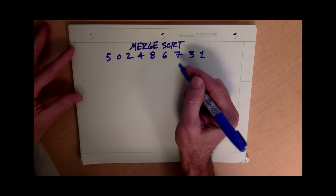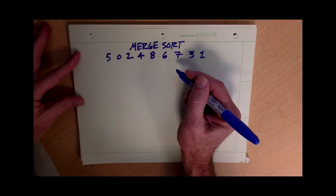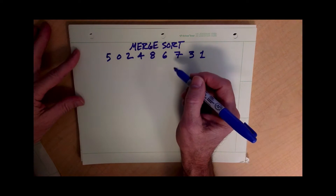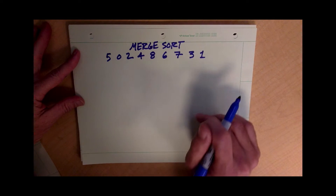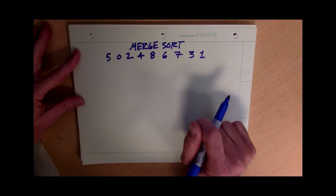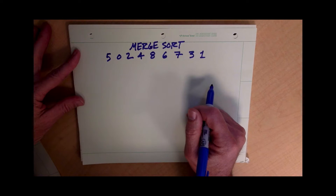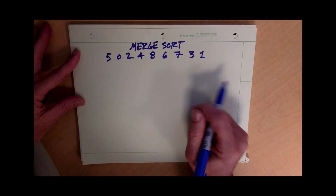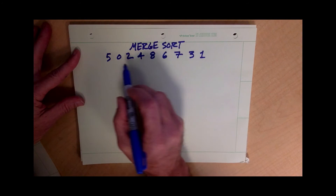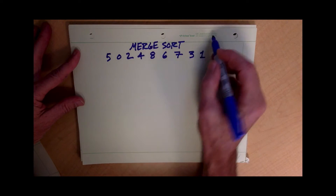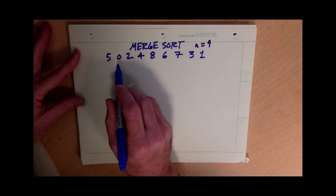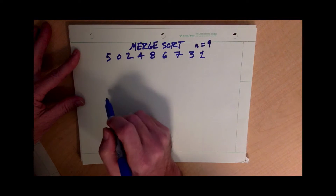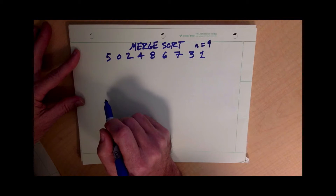The merge sort algorithm works on the principle that it's easier to create a sorted list of items out of two lists if those two lists have already been sorted. In this example we've got 9 digits, the digits from 0 through 8, and we're going to sort them using the merge sort algorithm.